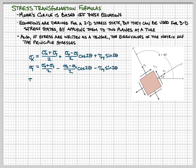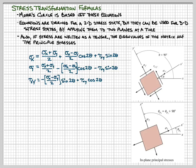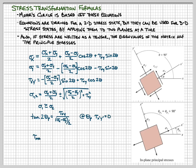The stress transformation formulas include an average normal stress as the first term, plus the difference between the normal stresses over 2 multiplied by a cosine term, and the shear stress multiplied by a sine term — with positive or negative signs depending on which direction you're calculating. For the principal stresses, the formula is the average normal stress plus or minus a square root term: the plus gives sigma 1 (maximum) and the minus gives sigma 2 (minimum). The angle theta_p is found using an inverse tangent function, and the maximum in-plane shear stress equals that square root term.